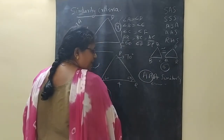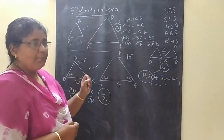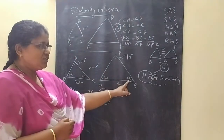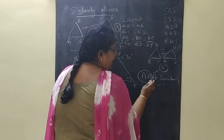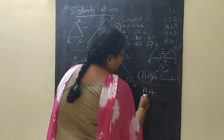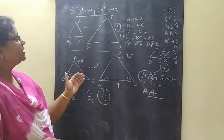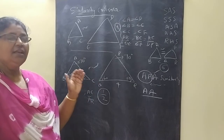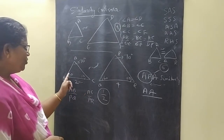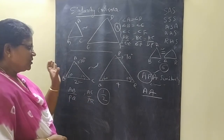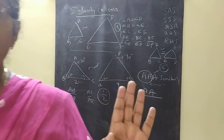It is enough to show two angles equal. Why? By the angle sum property, if two angles are equal — say 60 equals 60 and 50 equals 50 — then automatically the third angles are also equal, both being 70. So we use the AA similarity criteria. If in two triangles any two corresponding angles are equal, then the corresponding sides are in the same ratio and the triangles are said to be similar. That is the first similarity criteria: the AA similarity criteria.